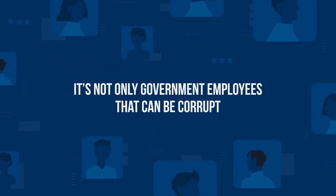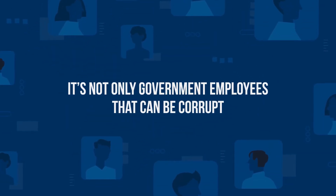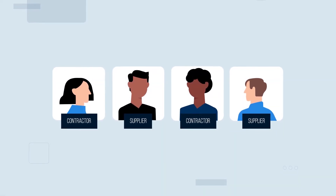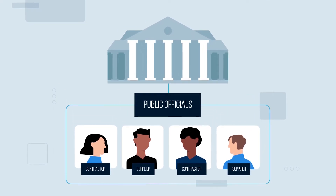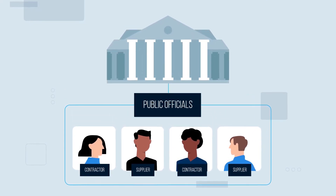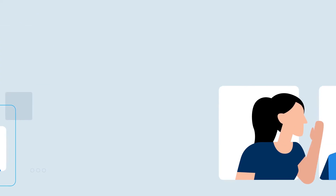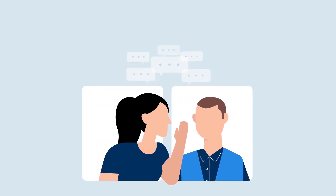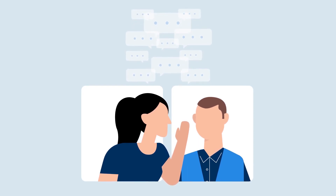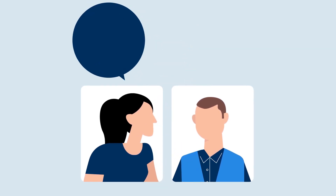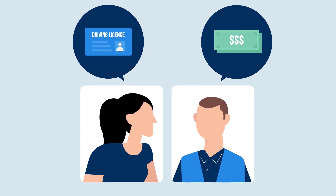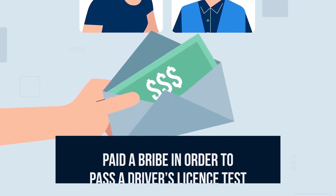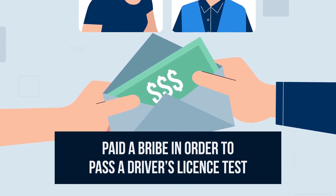Importantly, it is not only government employees that can be corrupt. Under the ICAC Act, contractors or suppliers could be classified as public officials if their work is for or on behalf of the government. Members of the public can also engage in corrupt conduct if they influence or try to influence a NSW public official to use his or her position in a way that is dishonest or partial — for instance, if they paid a bribe in order to pass a driver's licence test.